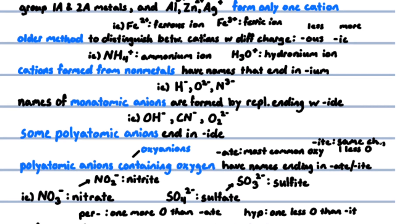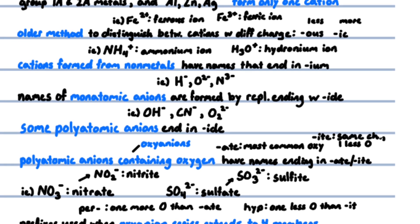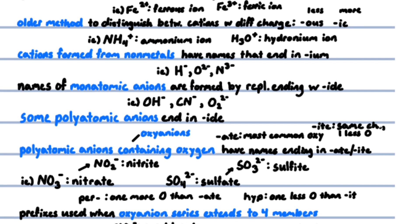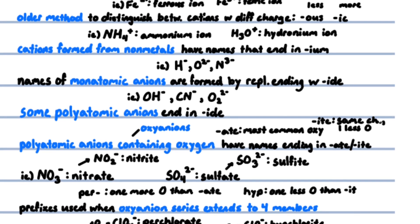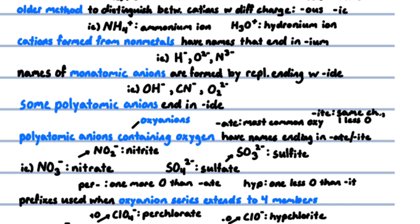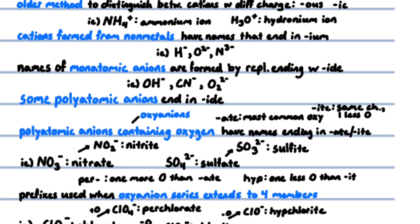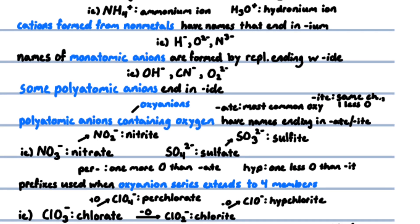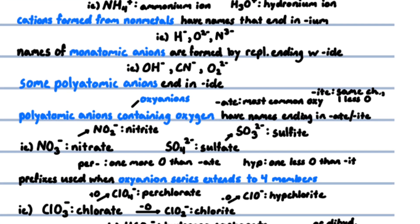Prefixes are used when the series of oxyanions of an element extends to four members. The prefix per- indicates one more oxygen atom than the oxyanion ending in -ate. The prefix hypo- indicates one oxygen atom fewer than the oxyanion ending in -ite. For example, ClO3 with a negative one charge is chlorate. One more oxygen—ClO4—is perchlorate. One less oxygen than chlorate—ClO2—is chlorite. One less oxygen than chlorite is hypochlorite—ClO with a negative one charge.